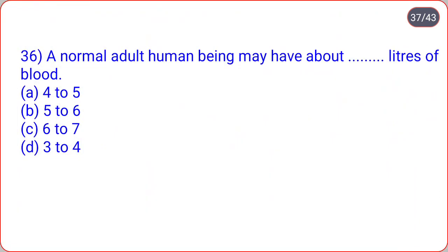A normal adult human being may have about dot-dot liters of blood. Options are 4 to 5, 5 to 6, 6 to 7, 3 to 4. A normal adult human being may have about 5 to 6 liters of blood.